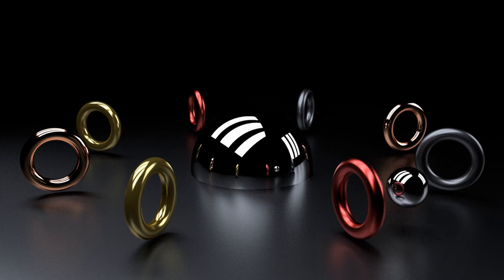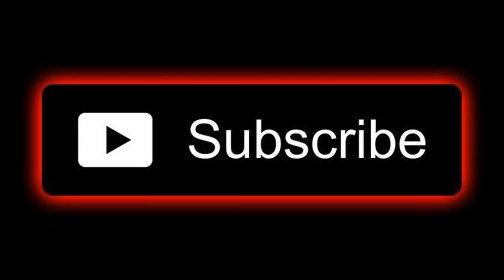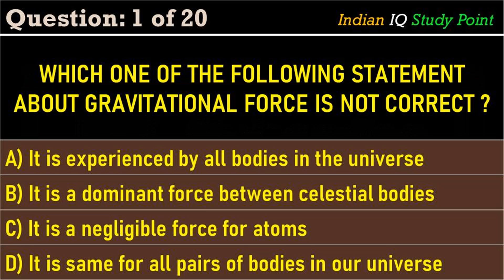Hi friends, welcome back to Indian IQ Study Point. In this video we will discuss the topic of gravitation for groups prelims, UPSC, NDA, and all competitive exams. Coming to the first question: which of the following statements about gravitational force is not correct? Option A: it is experienced by all bodies in the universe. Option B: it is a dominant force between celestial bodies. Option C: it is a negligible force for atoms. Option D: it is the same for all pairs of bodies in our universe.